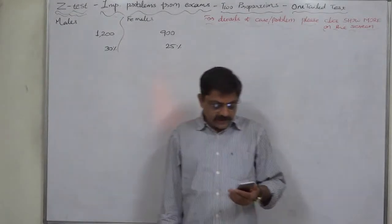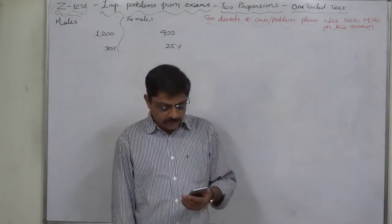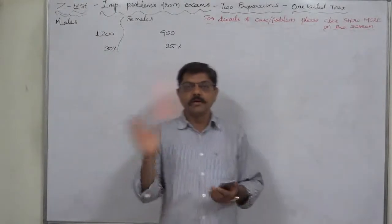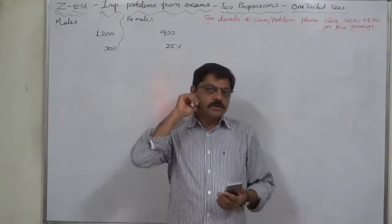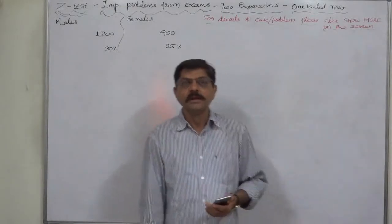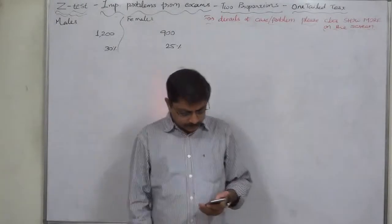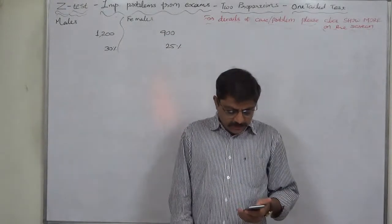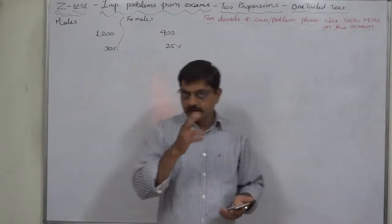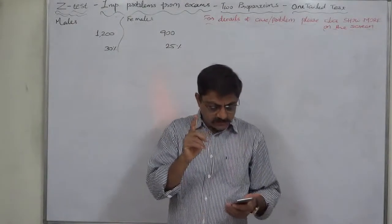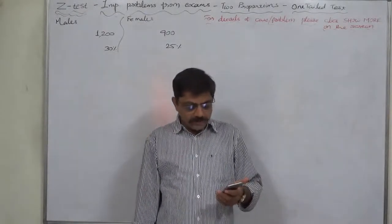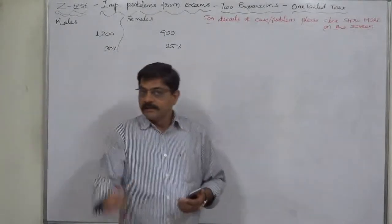While in a random sample of 900 females of the same age group, the proportion found with gray hair is 25%. In the Indian subcontinent, the frequency of hair washing in females is generally less than in males. The question is: what conclusion can we arrive at about the difference in the proportion of gray-haired people among males and females in the city?